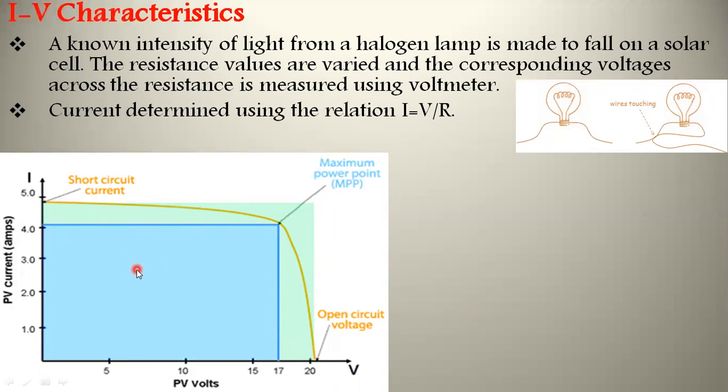In addition to these three terms, we have two other important terms. One is the fill factor. Fill factor gives information related to the quality of the solar cell, and it is the ratio between the maximum output power to the product of VOC and ISC.